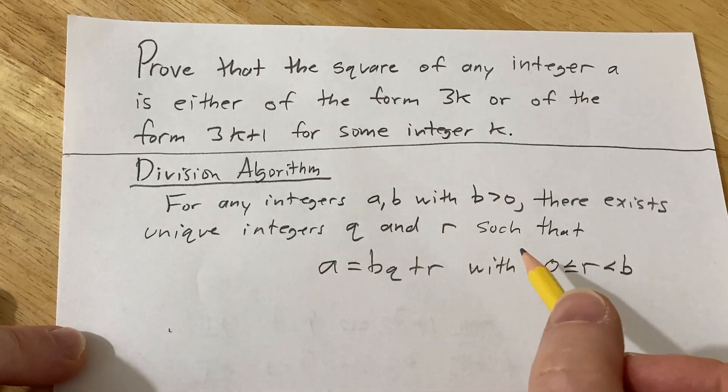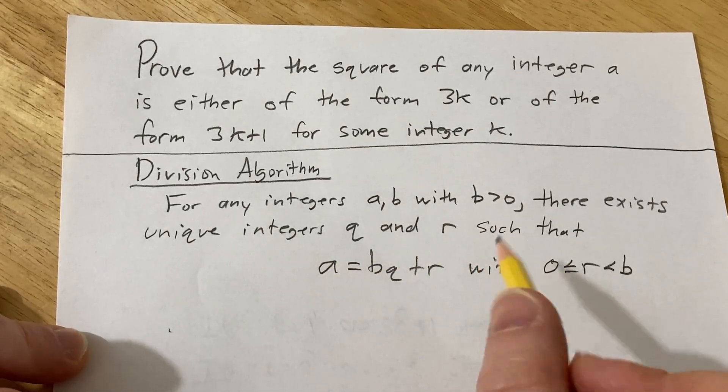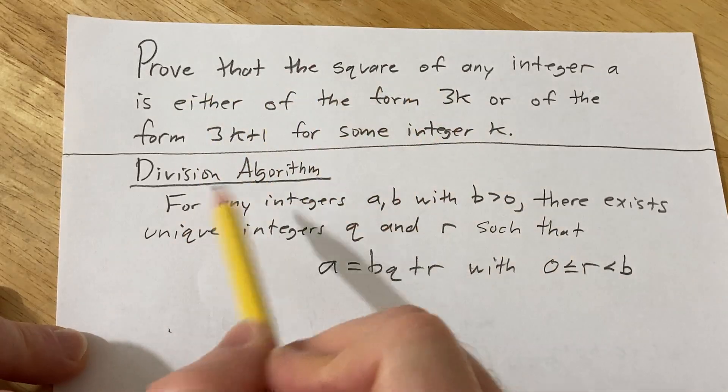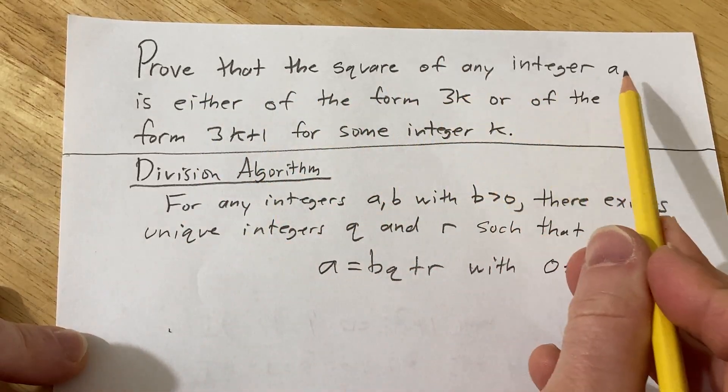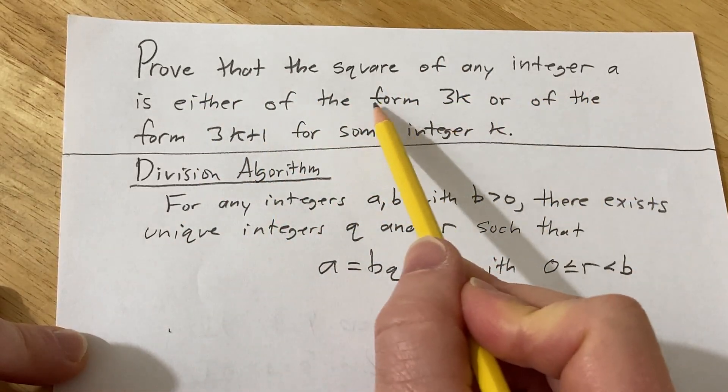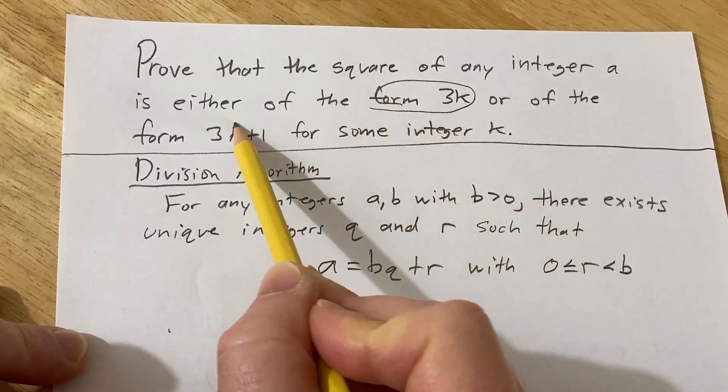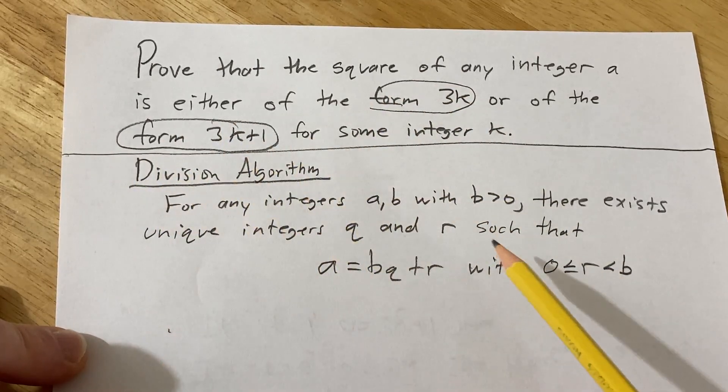This is called the division algorithm and this is what we're going to use in this problem. We have to prove the square of any integer a is either of the form 3k or of the form 3k+1 for some integer k.